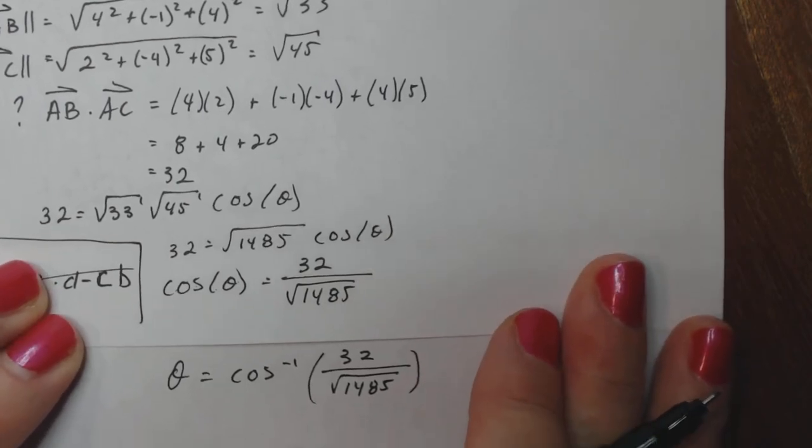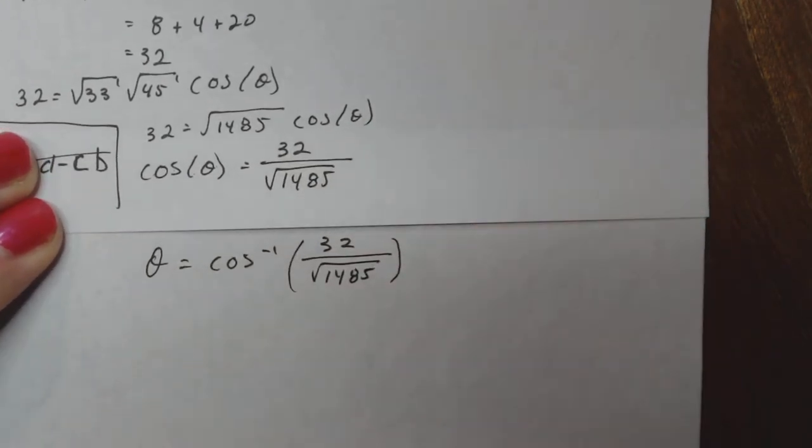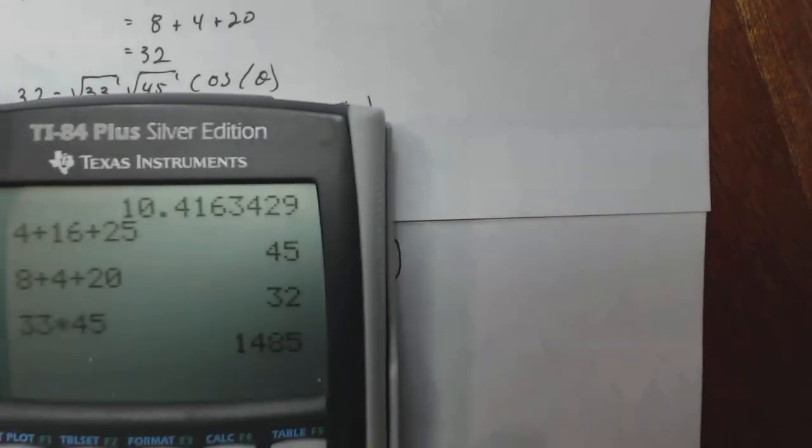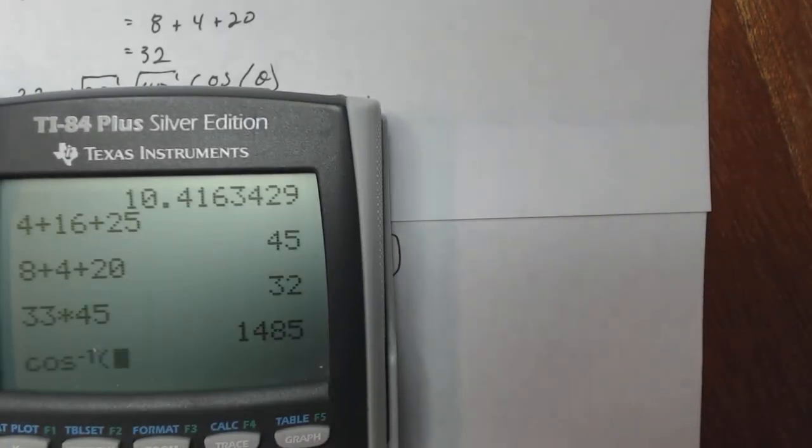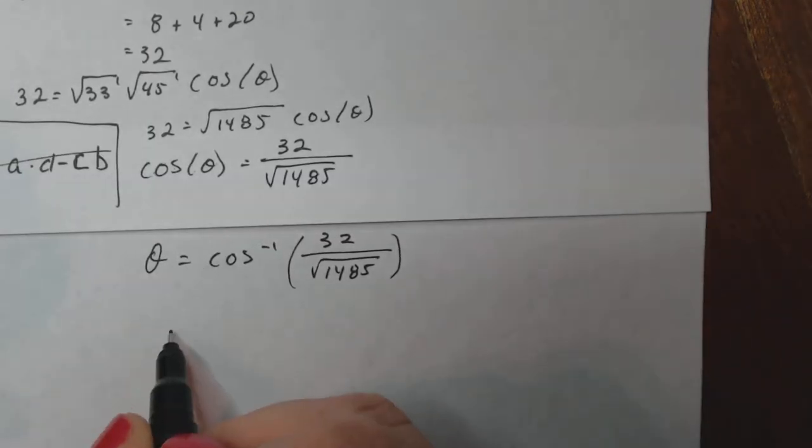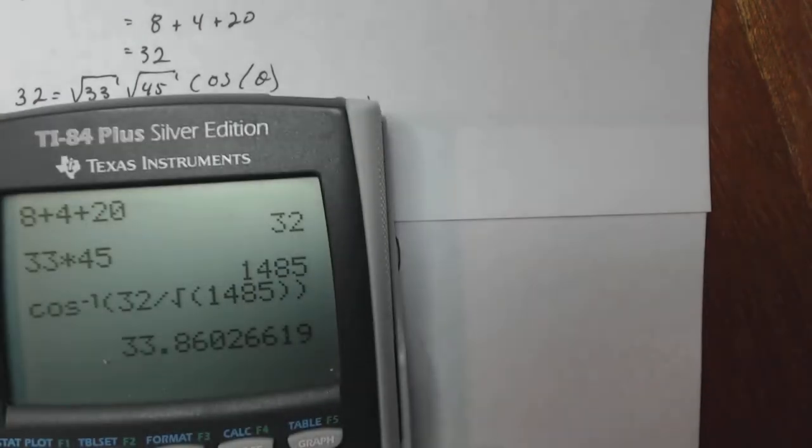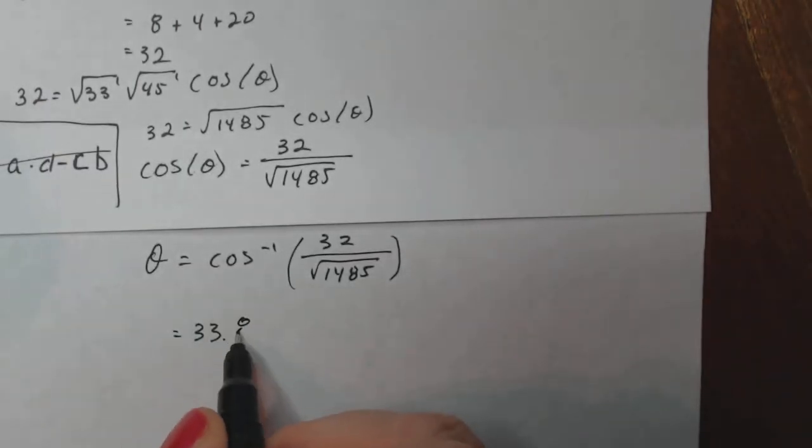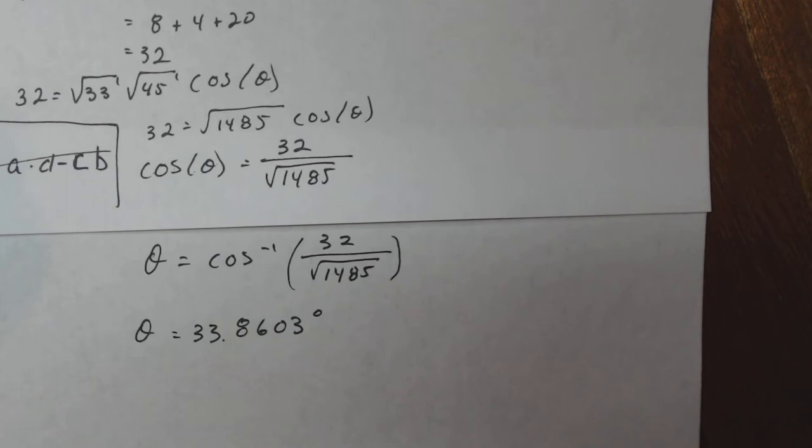Now don't panic. Just follow your nose. Follow the algebra that goes along with it and then see what happens. So I take my trusty machine and I do the cosine inverse of 32 divided by the square root of 1485. And that gives me 33.8603 degrees.